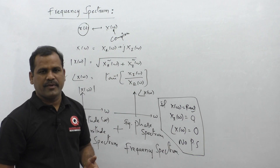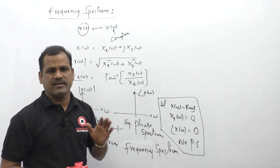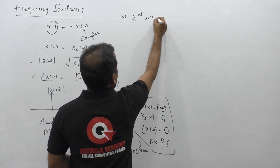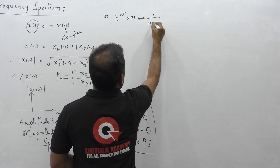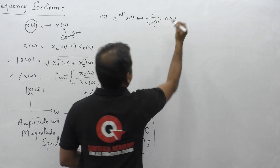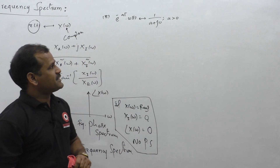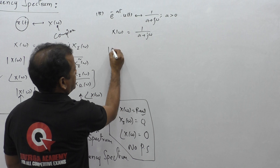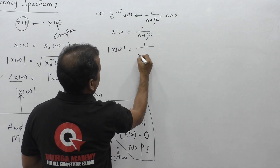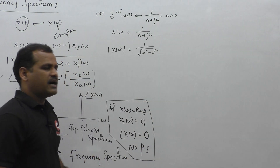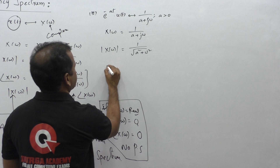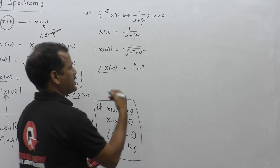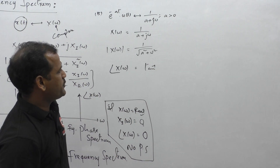Let us consider one example Fourier transform pair and plot the frequency spectrum. I will take the exponentially decaying function: e to the power of minus a t multiplied by u of t, having Fourier transform 1 by a plus j omega, where a is a positive quantity. So X of omega equals 1 by a plus j omega. The magnitude is 1 upon square root of a squared plus omega squared, and the phase is tan inverse of the real part and imaginary part of this function.